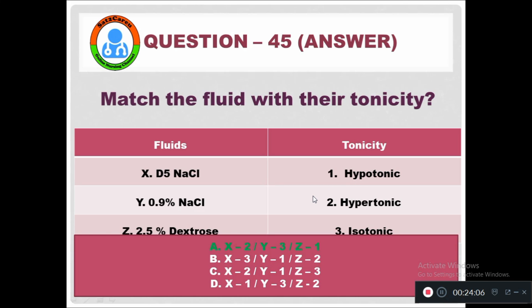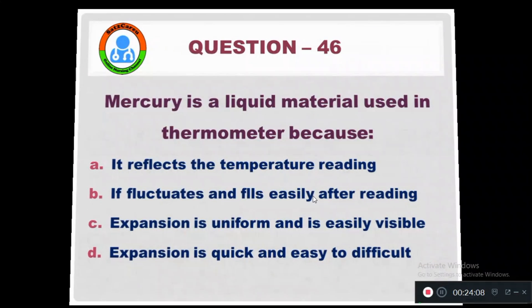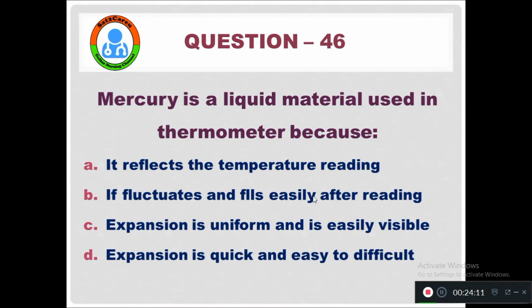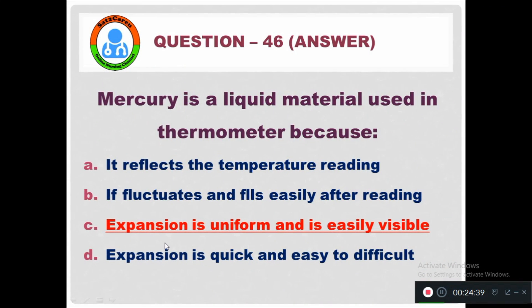Question 46: Mercury is used as a liquid material in a thermometer because — Option A: It reflects the temperature reading. Option B: It fluctuates and fills easily after reading. Option C: Expansion is uniform and easily visible. Option D: Expansion is quick and easily visible. The right answer is Option C — expansion is uniform and easily visible.